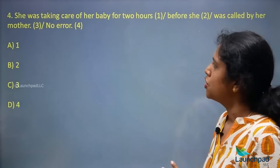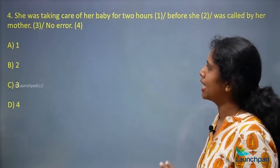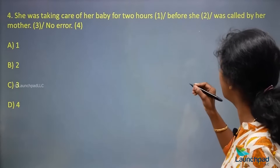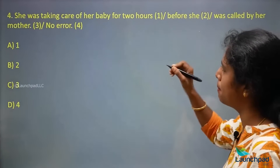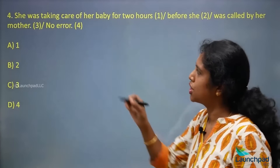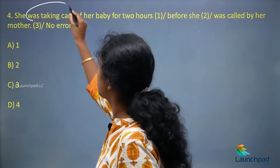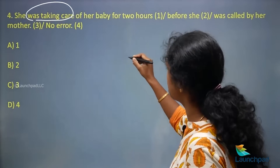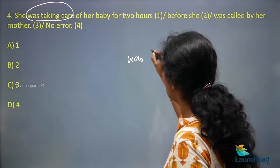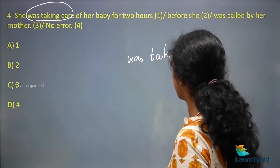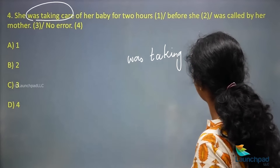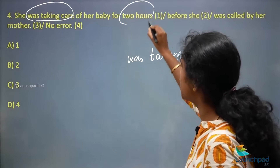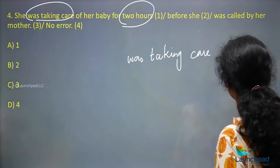Next question: 'She has taken care of her baby for two hours before she was called by her mother.' There is a subject, and the tense form given is 'was taking care.' But notice the duration — it is two hours — which indicates a span of time over the past.